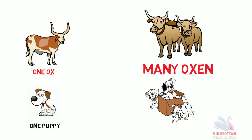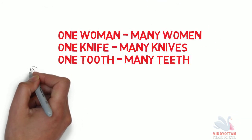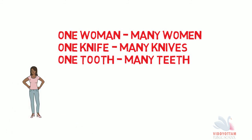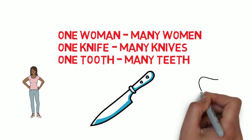One puppy, many puppies. You see, the Y in the puppy has been removed and we have written IES. Similarly, there are more such words like one woman, many women; one knife, many knives; one tooth, many teeth.